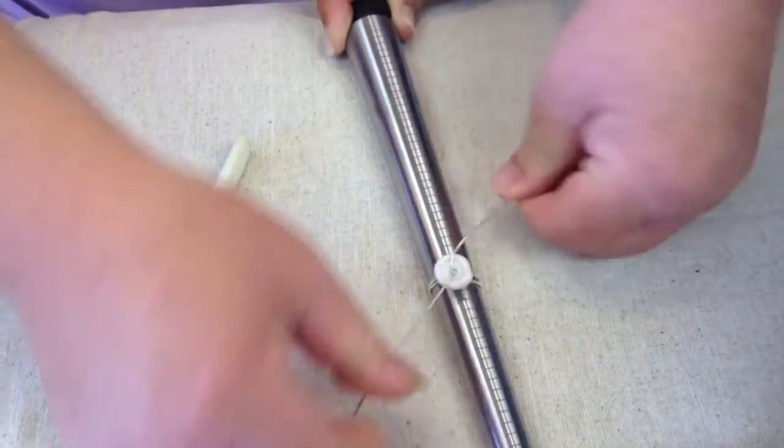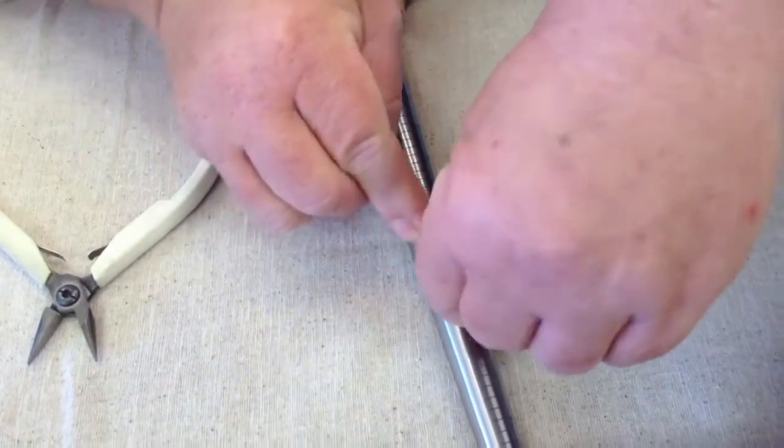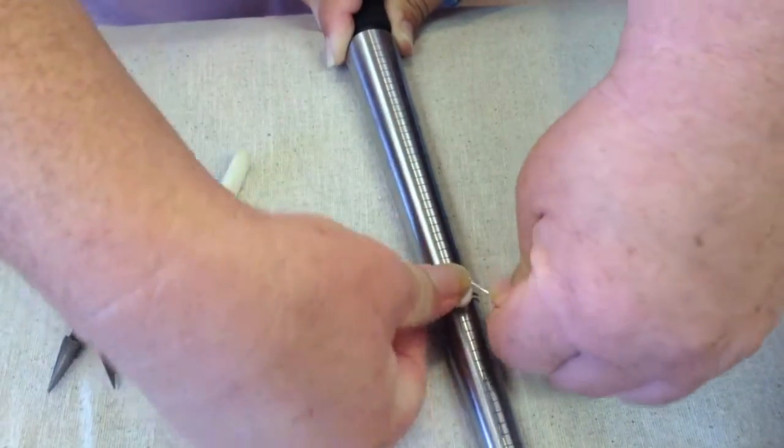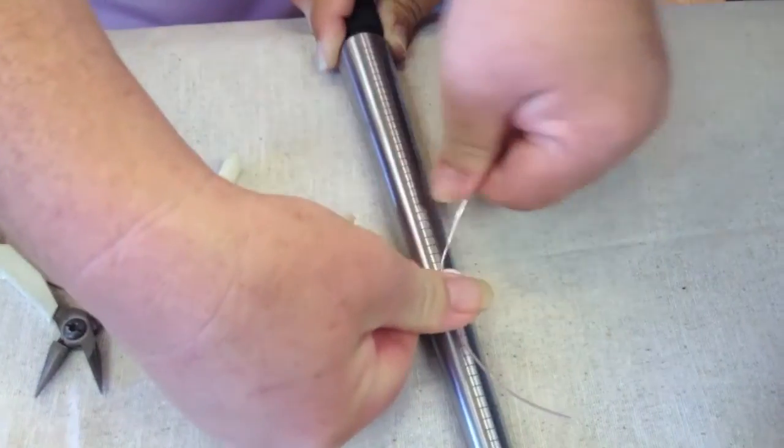As you do this, the wire will begin to spiral down inside of the shell where you can't see it and as the wires tighten, you'll see the coil begin on the outside of the shell.